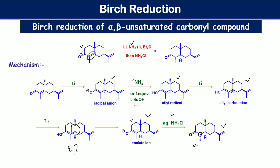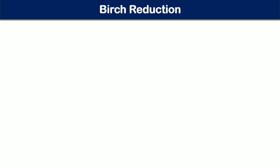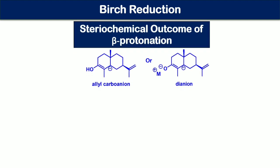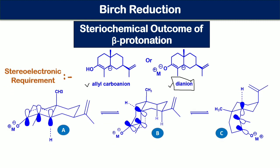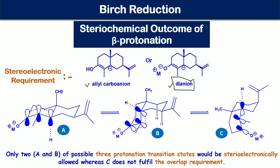Now the stereochemistry of the fourth step — beta protonation — and the last step — alpha protonation — will be explained. For beta protonation, which takes place in the fourth step, it may occur at the hydroxy allyl anion stage or dianion stage. For simplicity, the species undergoing beta protonation is represented as the dianion. For beta protonation, three possible protonation transition states exist, of which A and B are stereoelectronically allowed.